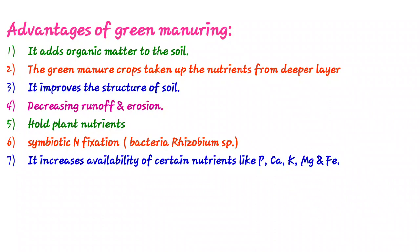It improves soil structure and facilitates the penetration of rainwater, thus decreasing runoff and erosion, decreasing downward percolation, and decreasing leaching losses. It holds plant nutrients that would otherwise be lost by leaching. Leguminous green manure crops add nitrogen to the soil by symbiotic nitrogen fixation through Rhizobium species. It also increases the availability of certain nutrients like phosphorus, calcium, potassium, magnesium, iron, and other nutrients.